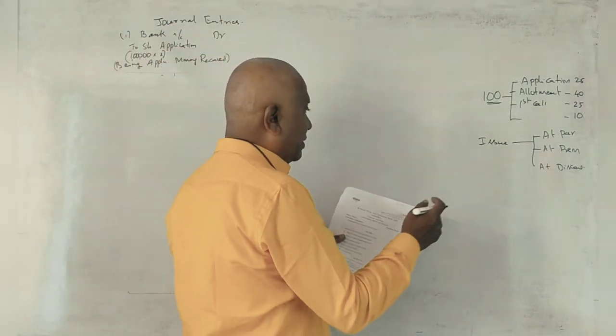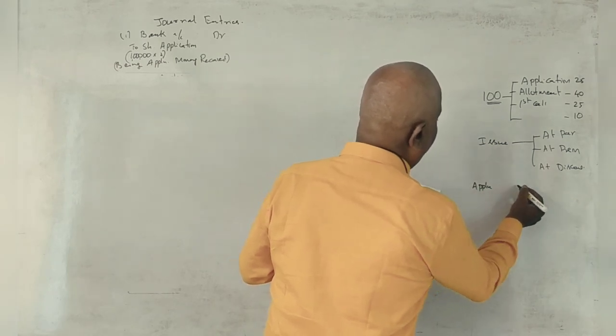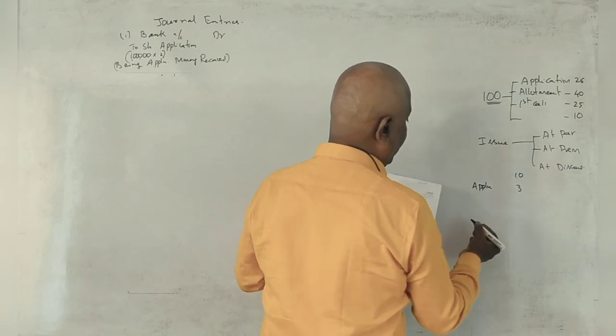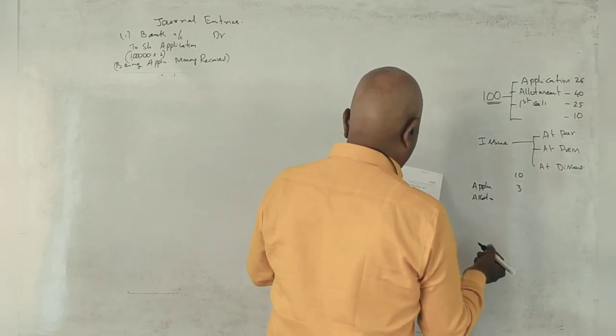So this is the first one. Now, the application is Rs. 3. It's only Rs. 10. In the allotment, it's only Rs. 5.